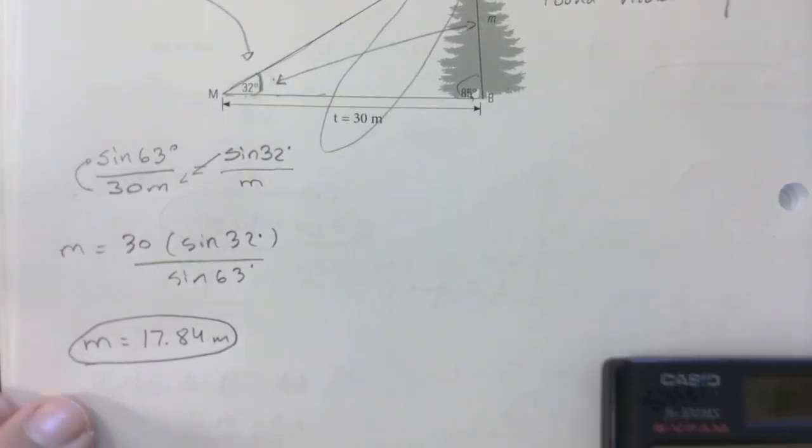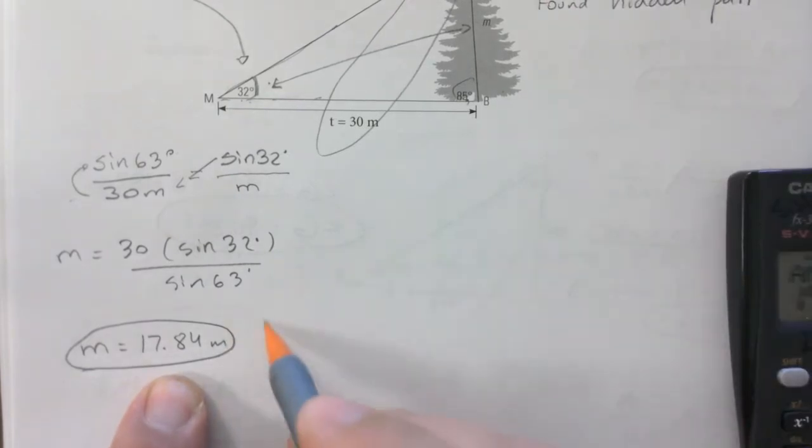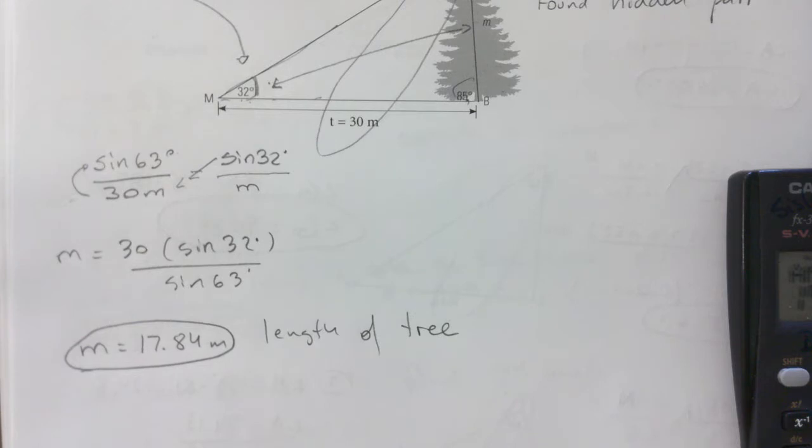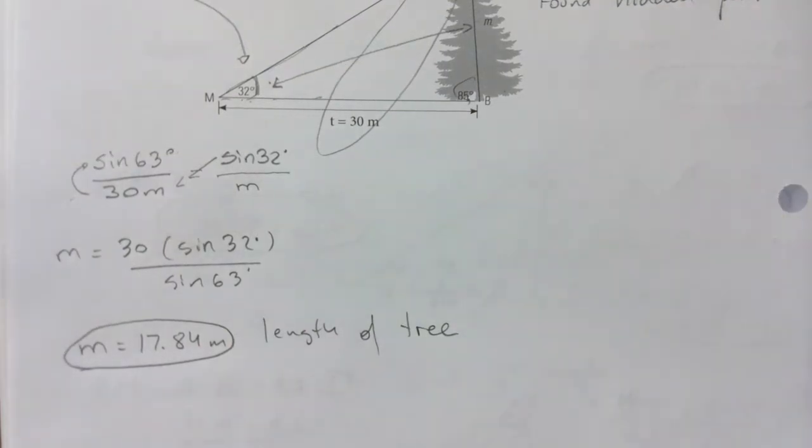That is the length of the tree, not to be confused with the height of the tree. So if a tree is leaning a little bit, the height of the tree is straight from the ground to the top, right? That would be the height.